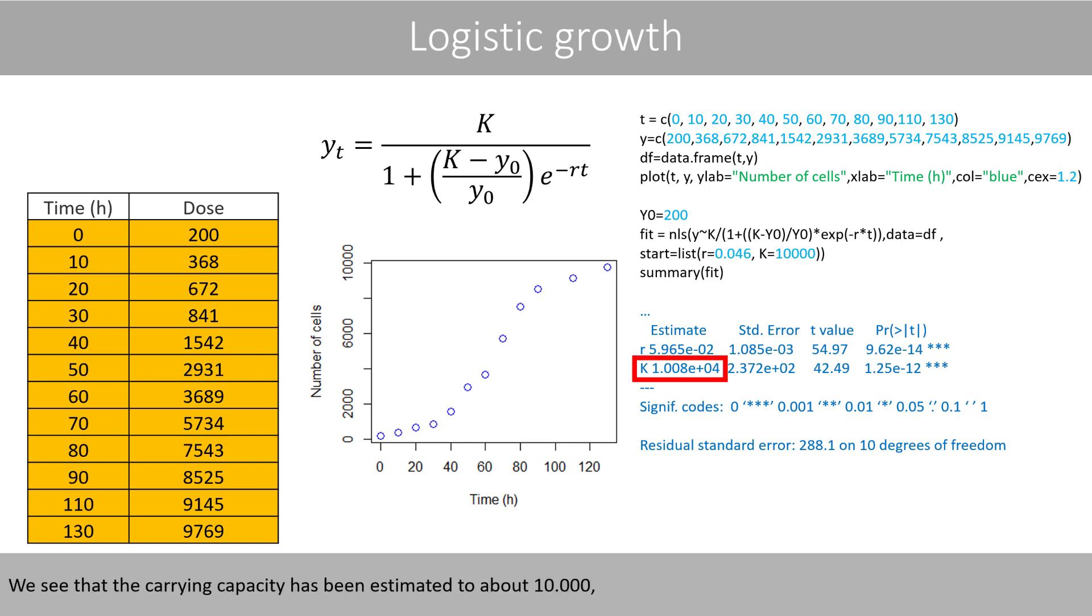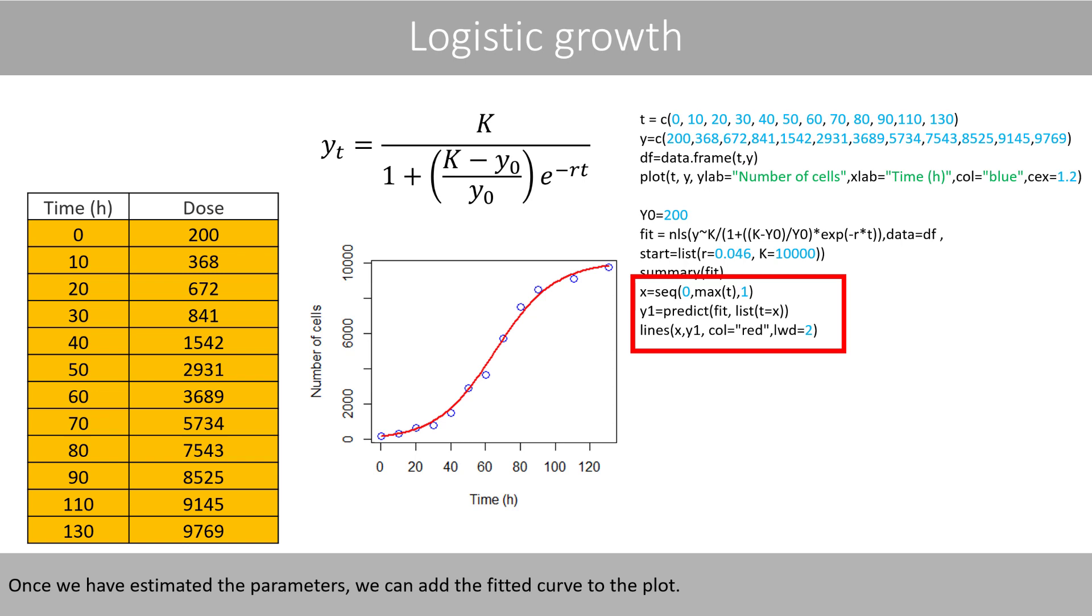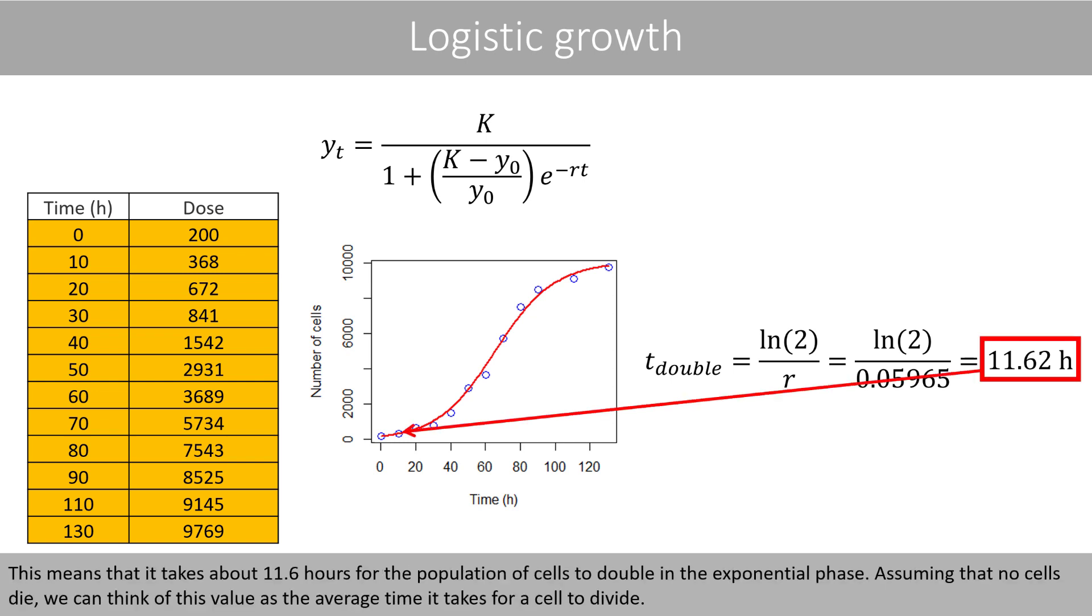We see that the carrying capacity, K, has been estimated to about 10,000, and that the maximum growth rate is 0.059 per hour, which means that the population approximately increases by 6% each hour in the exponential phase. Once we have estimated the parameters, we can add the fitted curve to the plot. From the lecture about exponential growth and doubling time, we know that we can estimate the doubling time like this. This means that it takes about 11.6 hours for the population of cells to double in the exponential phase. Assuming that no cells die, we can think of this value as the average time it takes for a cell to divide.